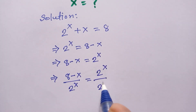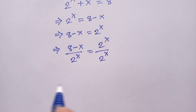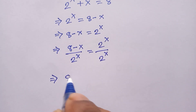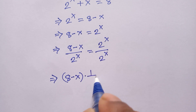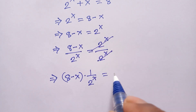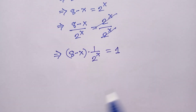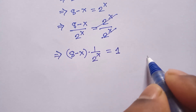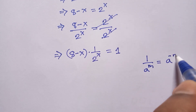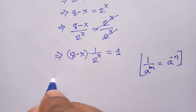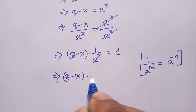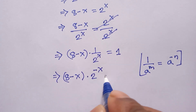So (8 minus x) divided by 2^(4x) equals 2^(4x) divided by 2^(4x). This can be written as (8 minus x) times 1 divided by 2^(4x) equals 1. We know that 1 divided by a^m equals a^(-m), so applying this formula we get (8 minus x) times 2^(-(4x)) equals 1, which simplifies to (8 minus x) times 2^(4 minus x) equals 1.